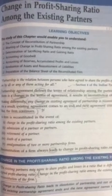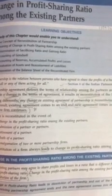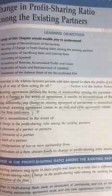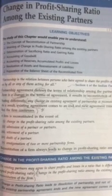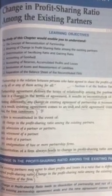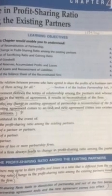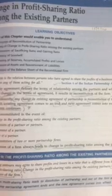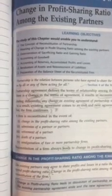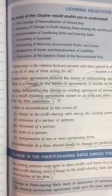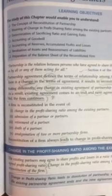There is an agreement which determines the relationship among partners, and if there is a change, it will be stated in the agreement. When a change occurs, the existing agreement comes to an end and a fresh agreement comes into existence. This is the meaning of reconstitution of firm. A firm is reconstituted in the event of a change in profit sharing ratio among existing partners.